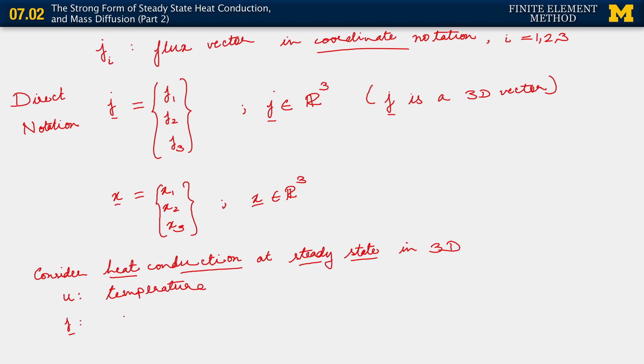J, then, is the heat flux vector, which is essentially the amount of heat crossing perpendicular to a unit area per unit time. That is J.